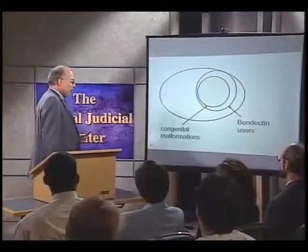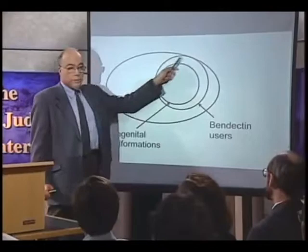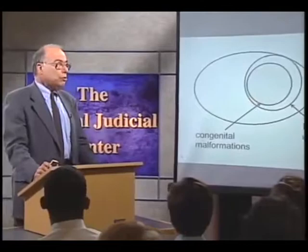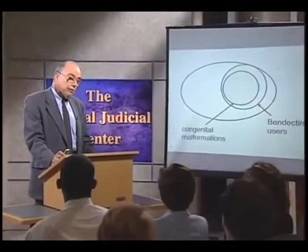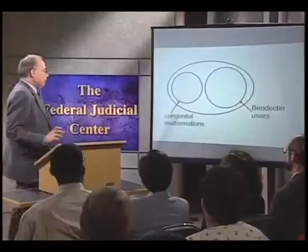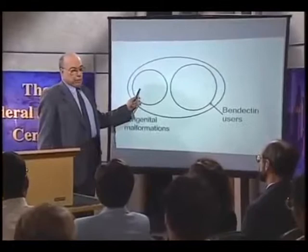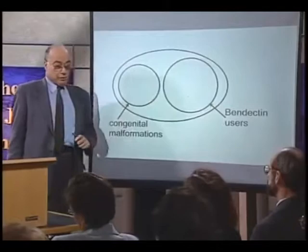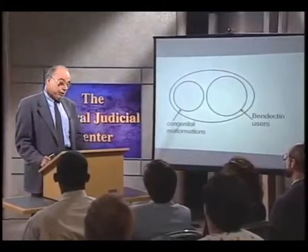Let us look at a few scenarios. In this scenario, we see that all the children with malformations were born to women who used Bendectin, shown schematically here. This would certainly be very strongly suggestive of a relationship between Bendectin use and the risk of malformations. Another possibility is that none of the children with malformations were born to mothers who took Bendectin — they are mutually exclusive circles — and this would be strongly indicative that there is no relationship between Bendectin use and the development of malformations.